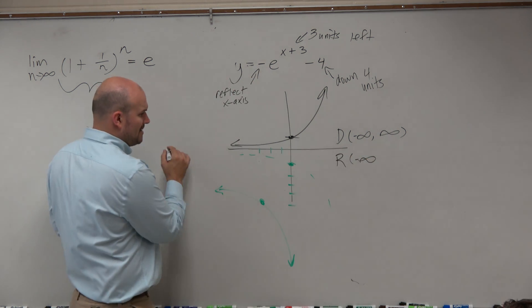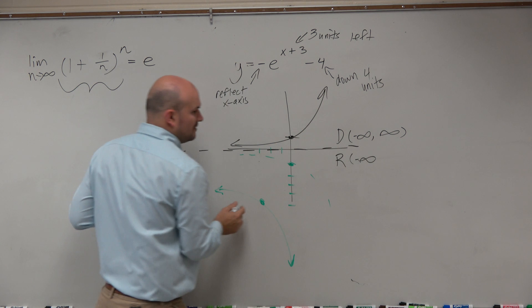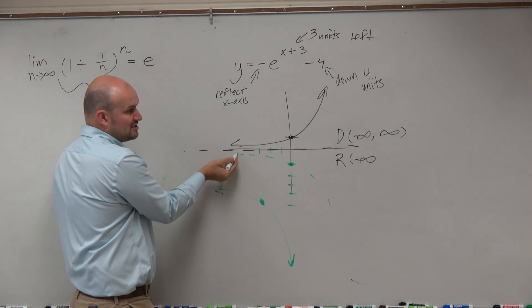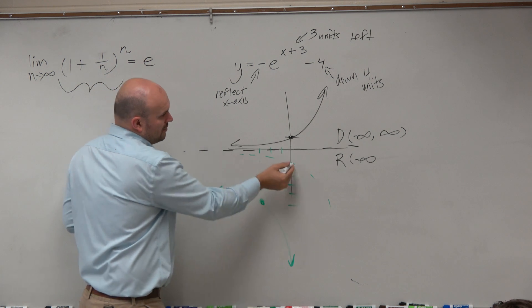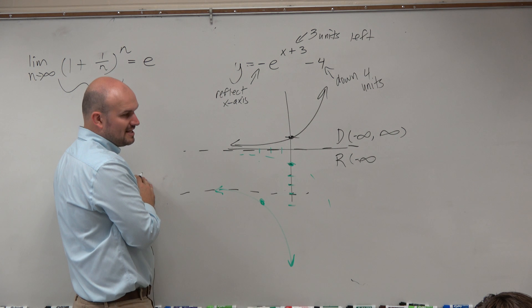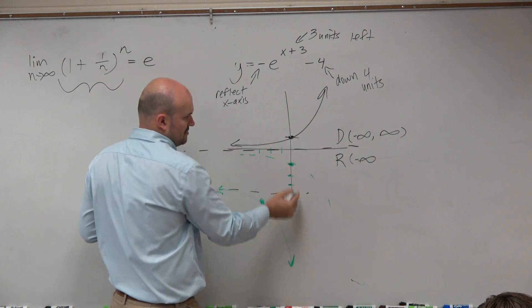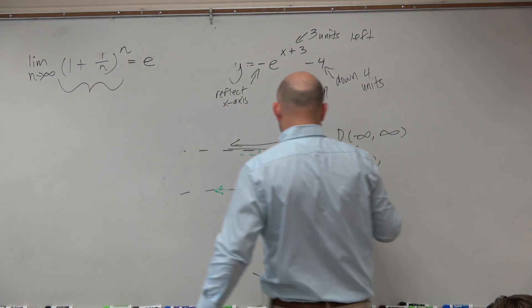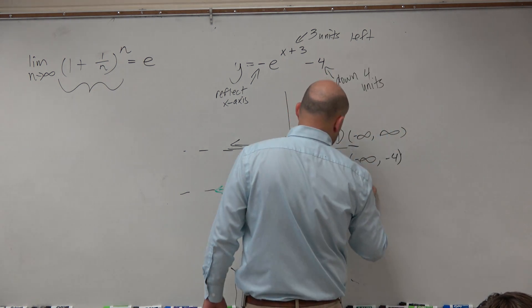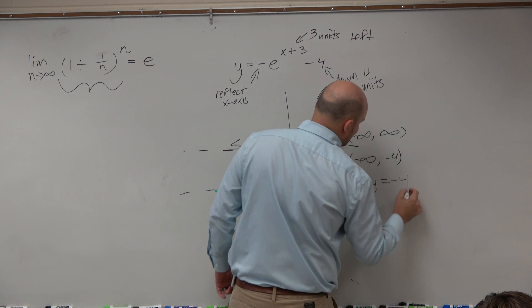The range is going from negative infinity. But how high is it going? So remember, there's this asymptote here. It doesn't get to zero. So when you reflect it, that doesn't change. But when you go down four—one, two, three, four—it's going to approach that asymptote, which is at negative four. And so therefore, we can say there's a horizontal asymptote of y equals negative four.